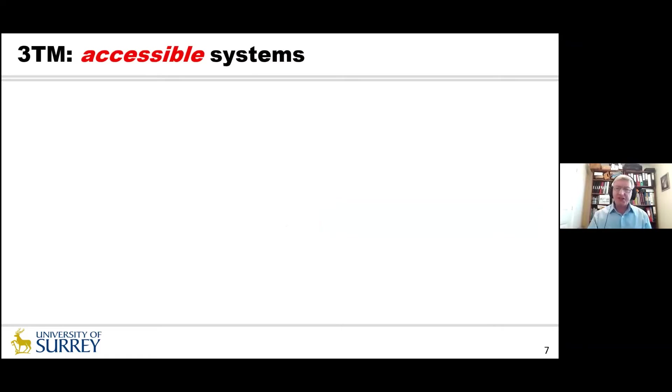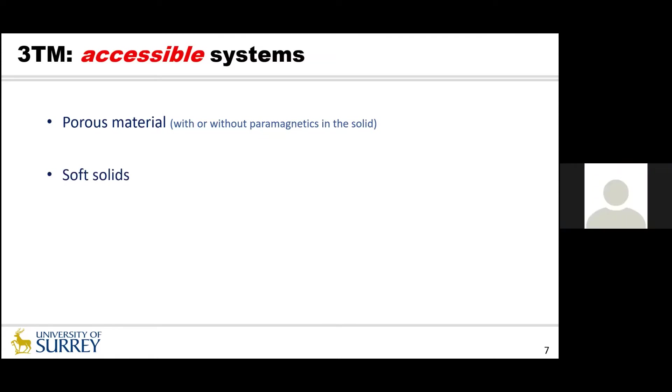So what sort of systems are accessible to us? Well, we've done a lot of work over the years on a wide range of systems. These are generally porous material with solid, with or without paramagnetic ions. So obviously cementitious material is of interest to us, but there's a wide range of silicas, rocks like clay and so forth, limestone. These sorts of materials are accessible to this analysis, plasters, et cetera, et cetera.